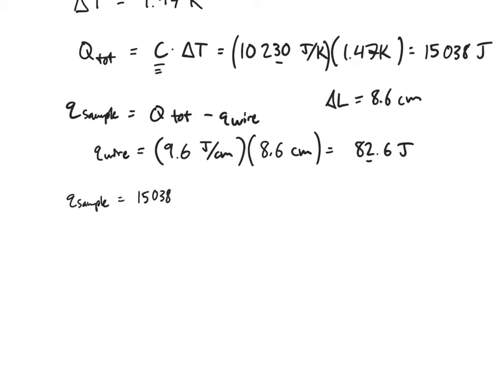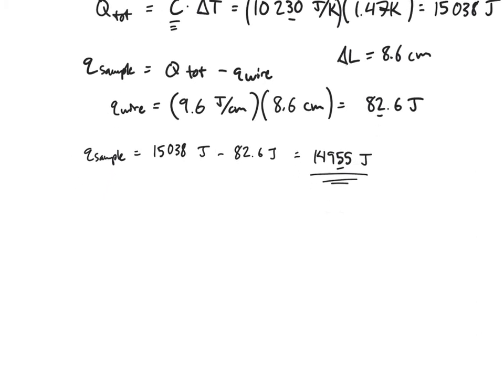That's how much heat was released by the combusting wire in the reaction. When I plug in those values into Q_sample, 15,038 joules minus 82.6 joules, I get 14,955 joules.